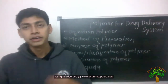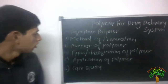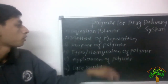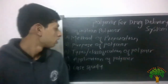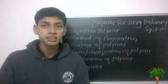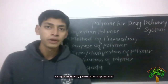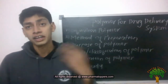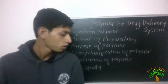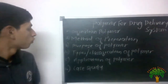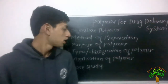Moving towards the purpose of polymers — why is there a need for polymers from a formulation point of view? Polymers are used in formulation mainly for three reasons: first, to increase the bioavailability of the drug; second, to achieve targeted delivery of the drug; and third, to reduce the toxicity of the drug.